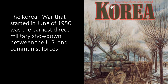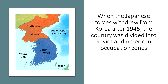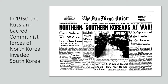When the Japanese forces withdrew from Korea after 1945, the country was divided into Soviet and American occupation zones, which in 1948 became communist North Korea and anti-communist South Korea. When the communist forces emerged victorious in China in 1949, many people in the U.S. broadly believed that a worldwide communist conspiracy was on the offensive. In 1950, the Russian-backed communist force of North Korea invaded South Korea. U.S. President Harry Truman sent U.S. troops to lead a U.N. coalition force to stop what he interpreted as a coordinated communist effort to dominate Asia.